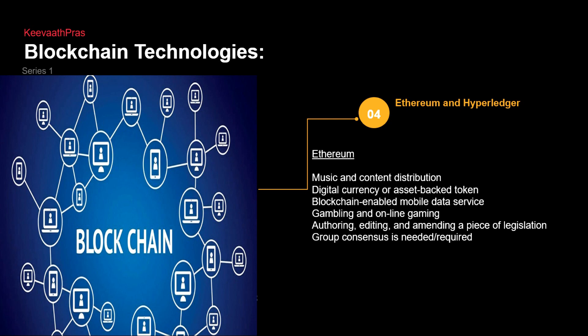Ethereum is a cryptocurrency currently ranked around number two or three. At the time I'm speaking it is fifteen hundred dollars, and it went up to twenty-eight hundred dollars before it crashed. Ethereum is considered a serious competitor to Bitcoin. Its use cases include music and content distribution, digital currency, asset-based tokens, blockchain-enabled mobile data services, online gambling, and authoring or amending legislation. Group consensus is needed, and it uses the proof of work and proof of stake concept.